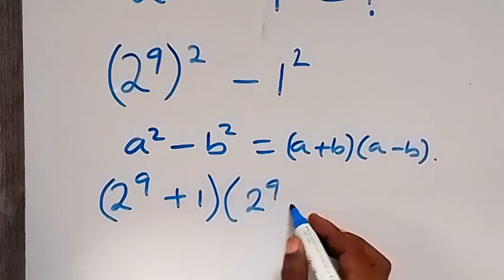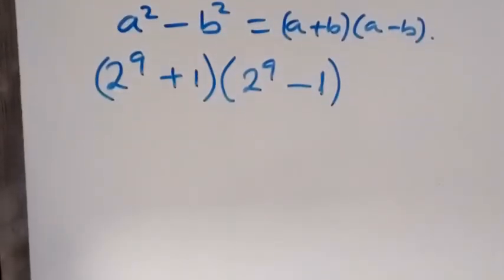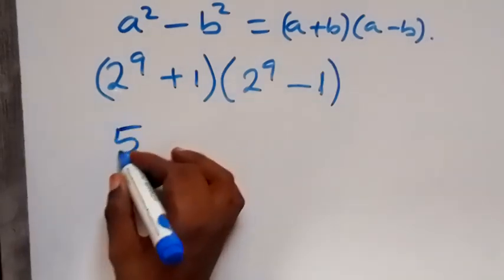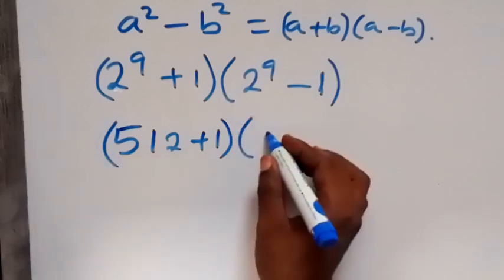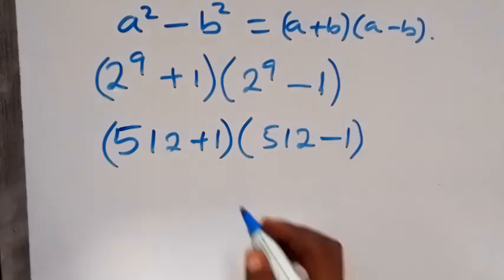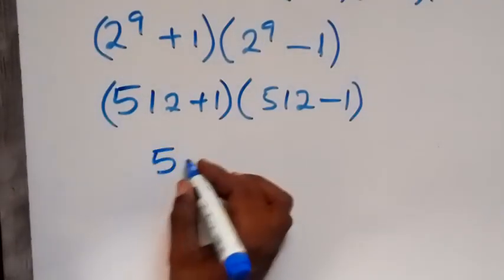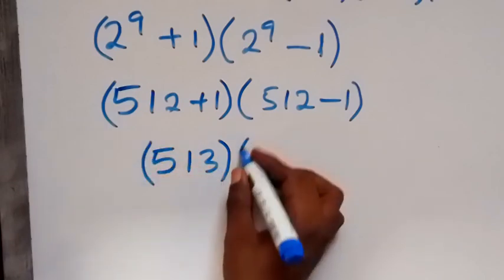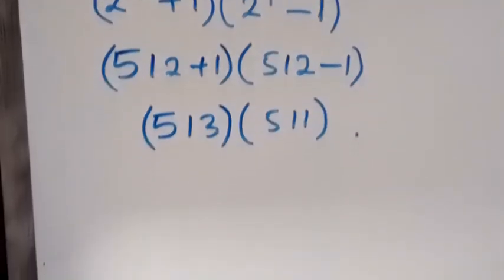Then from here, 2 raised to power 9 means 2 multiplied itself 9 times. Then 2 raised to power 9 is 512. So 512 plus 1, then from here we have 512 minus 1. 512 plus 1, that's 513. We have 513, then multiply by 511 here.